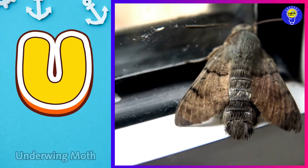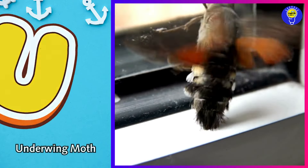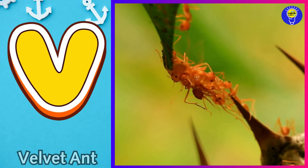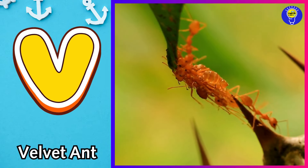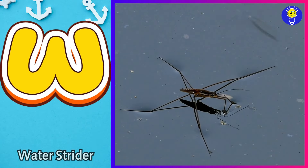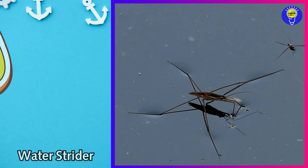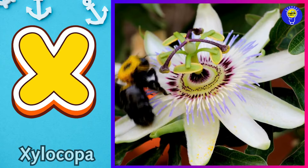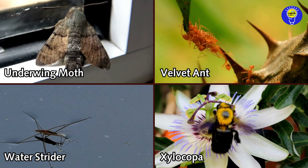U is for underwing moth. u, underwing moth. V is for velvet ant. v, velvet ant. W is for water strider. w, water strider. X is for xylocopa. x, xylocopa.